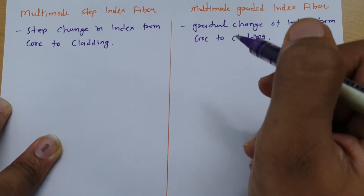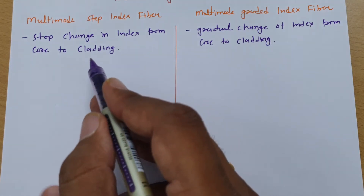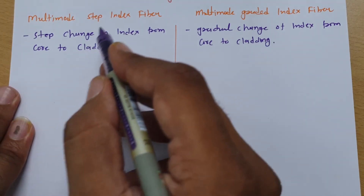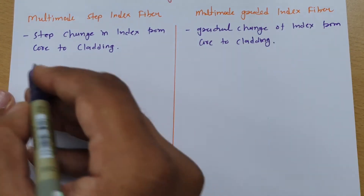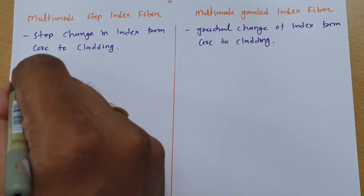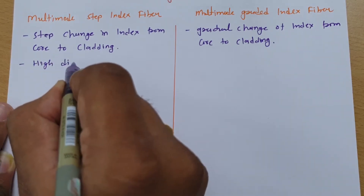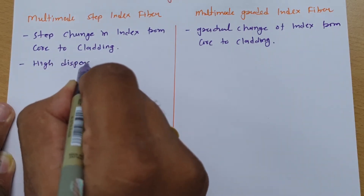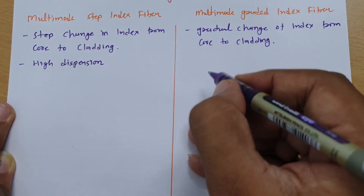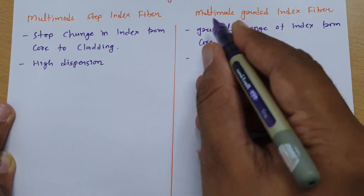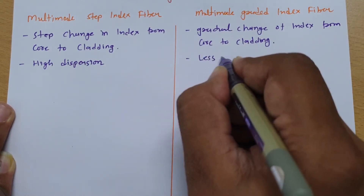The second point is based on dispersion. When you talk about how much dispersion of signal will happen in Step Index, it will be very high compared to Graded Index. So dispersion is high in case of Multi-mode Step Index Fibre, and in case of Multi-mode Graded Index Fibre, dispersion will be less.